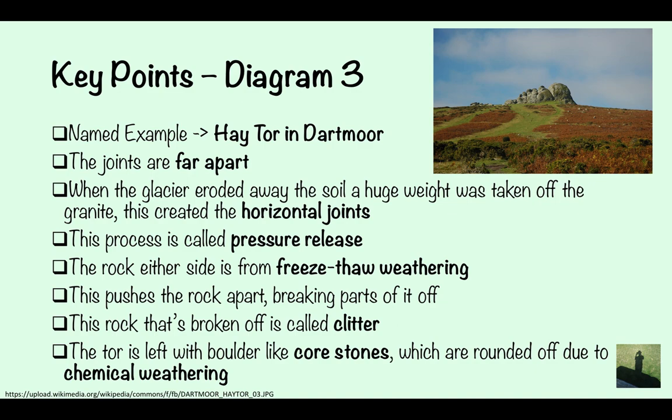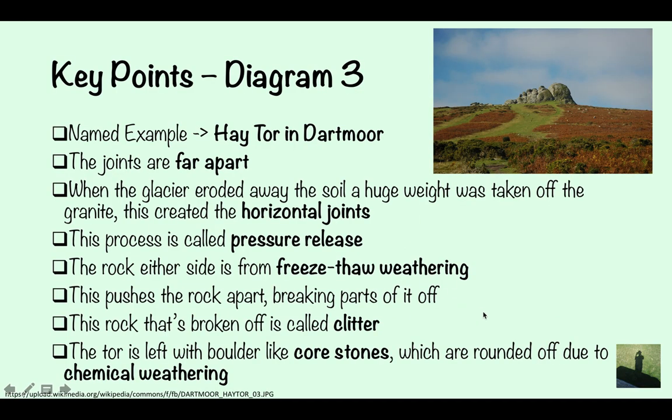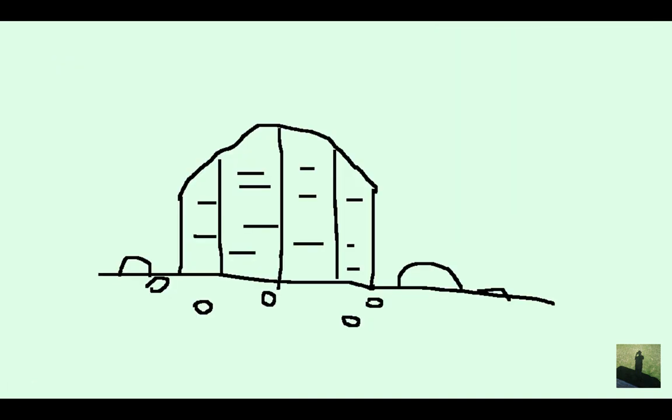So the rock either side is from freeze-thaw weathering. So this here, this here, that is because of freeze-thaw weathering. So this granite has been worn away by the freeze-thaw weathering, leaving this. And this pushes the rock apart, breaking bits of it off. So like this. Freeze-thaw has broken it apart.